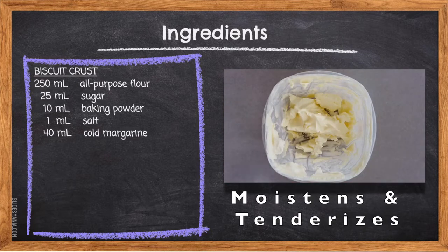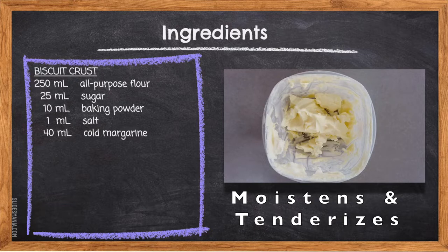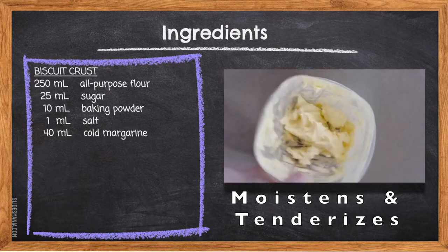40ml Cold Margarine. This solid fat acts as a tenderizer, for it interferes with the development of gluten, keeping our biscuits soft in texture. It will also melt, creating pockets for steam to flow through, creating the flaky layers typical of anything using the biscuit method.